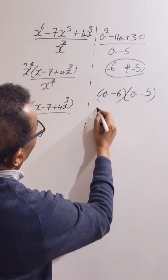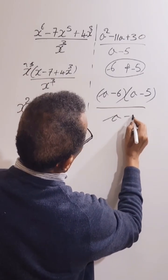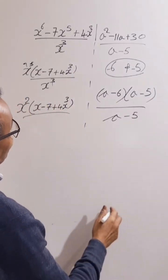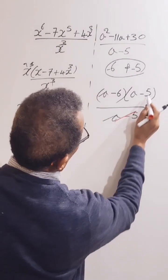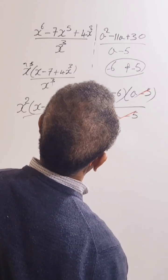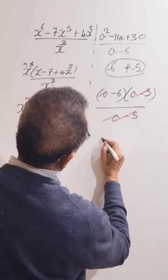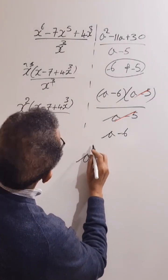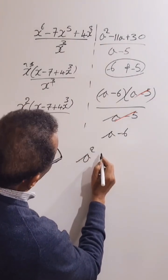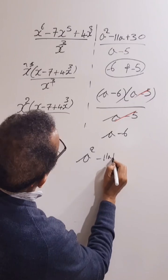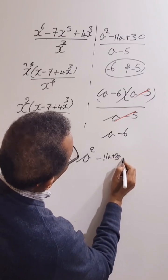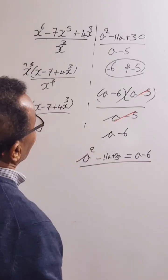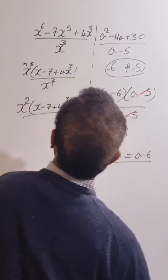Over a take away five. So this and this can be cancelled, and we are left with a take away six. So the simplest form of a squared minus 11a plus 30 is equal to a take away six.